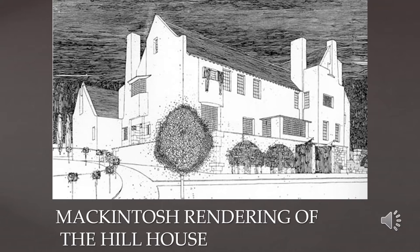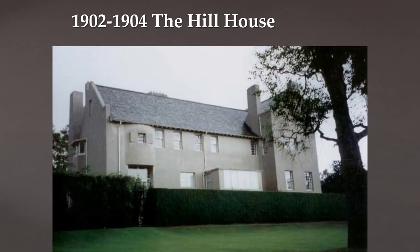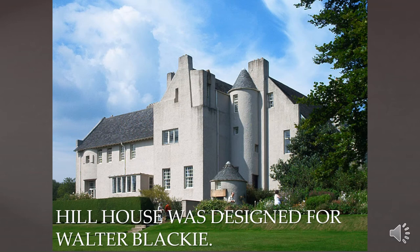Mackintosh tried to minimize exterior design to enhance the impact of the interior. The exterior of Hill House features completely asymmetrical construction with different roof levels and shapes, a tower inspired by castles, and a very rectilinear, plain, and sober appearance. The idea was to keep the outside plain so the inside would be emphasized, providing a sharp contrast to the unadorned exterior.